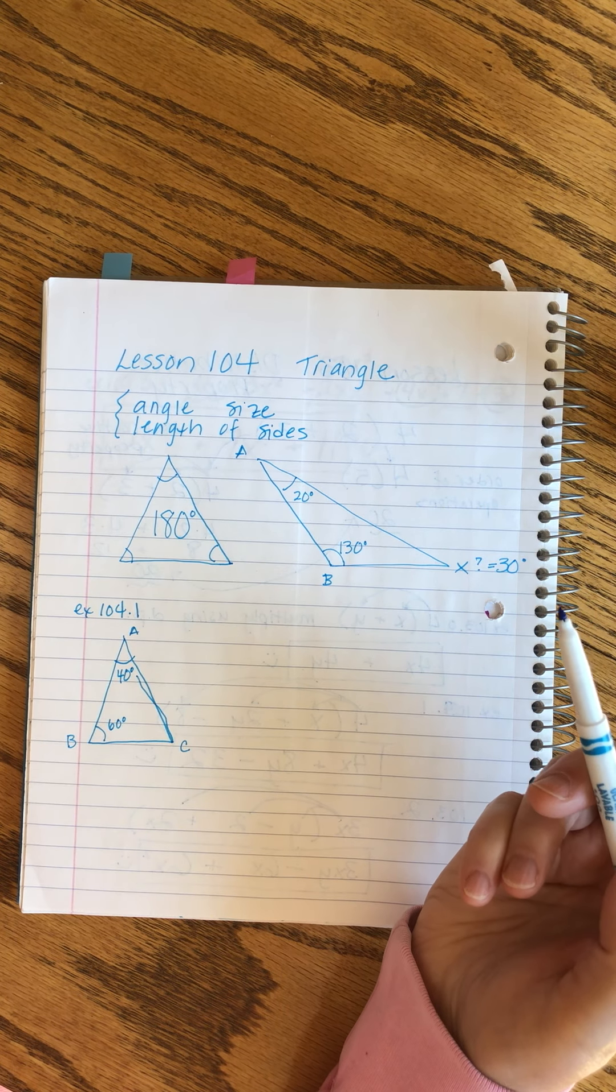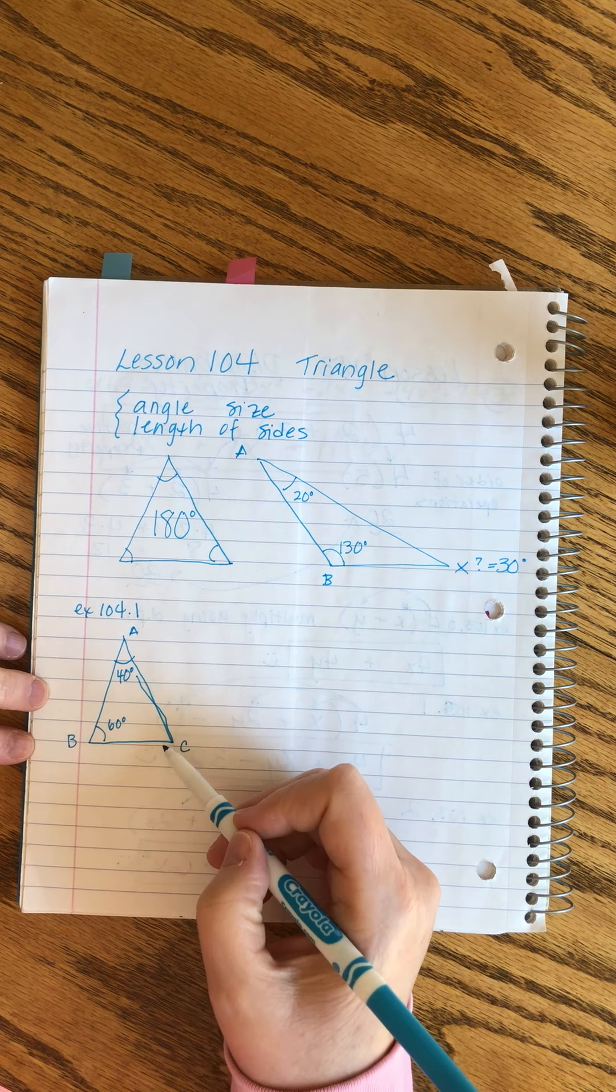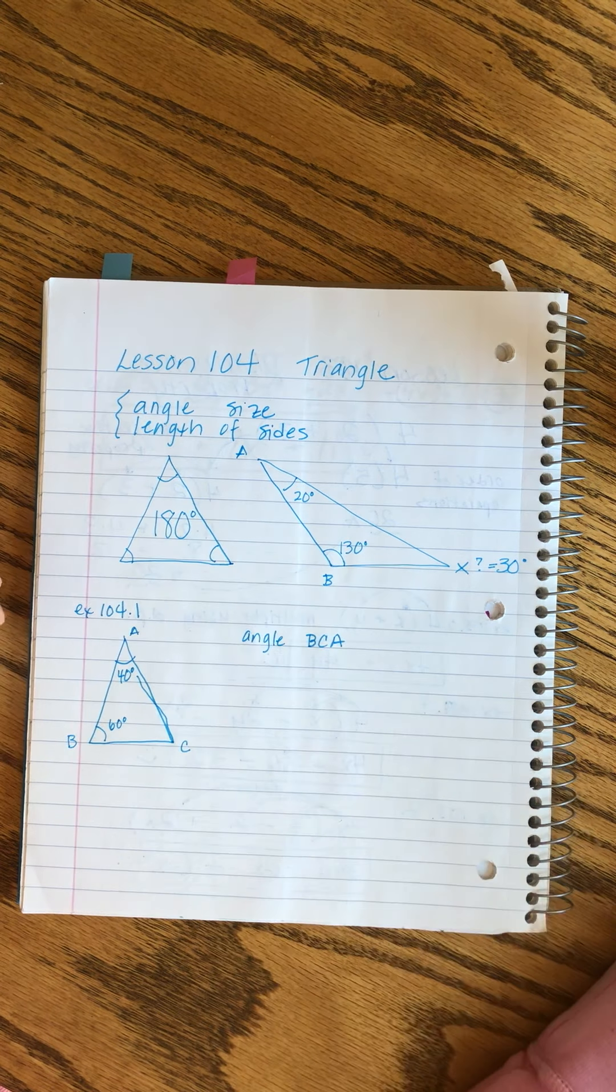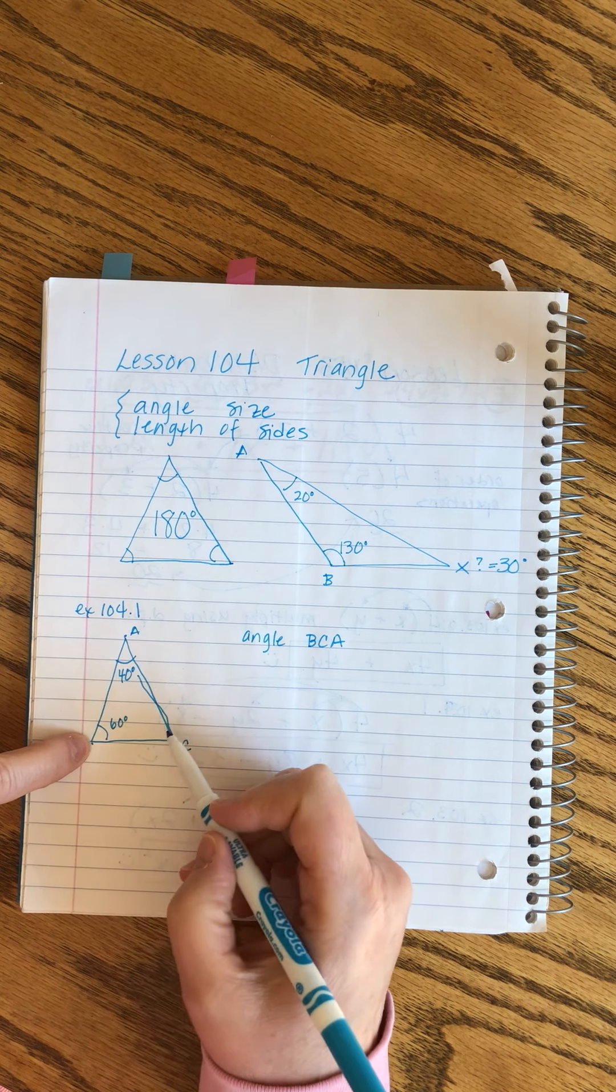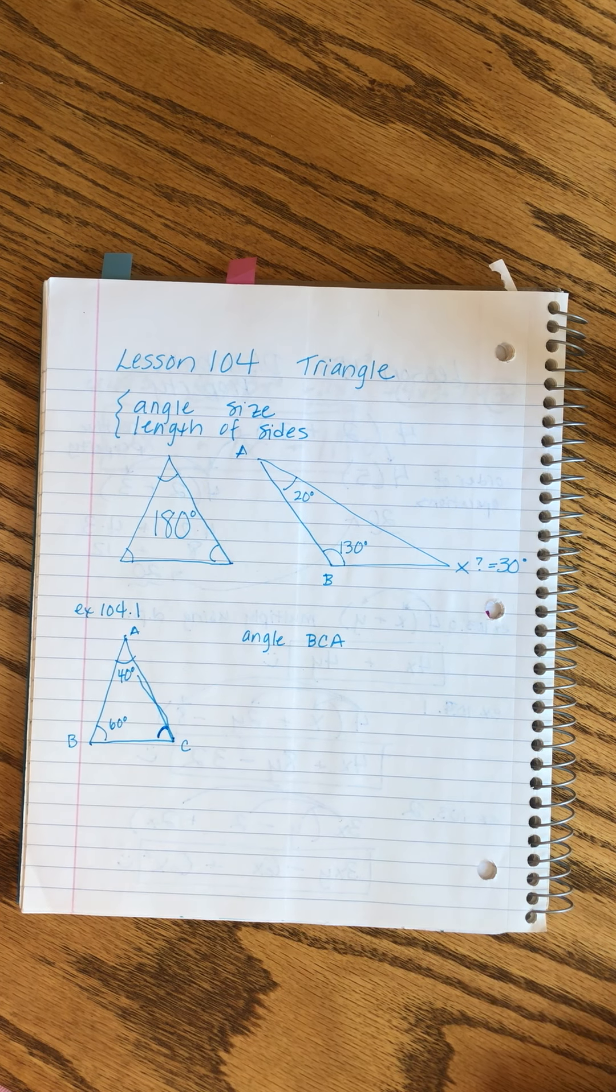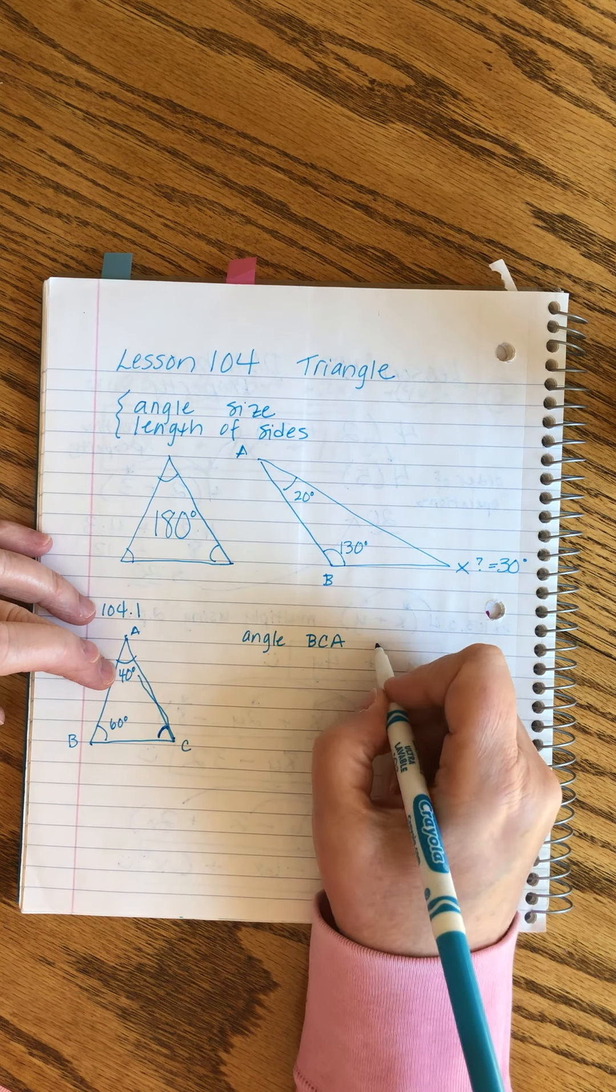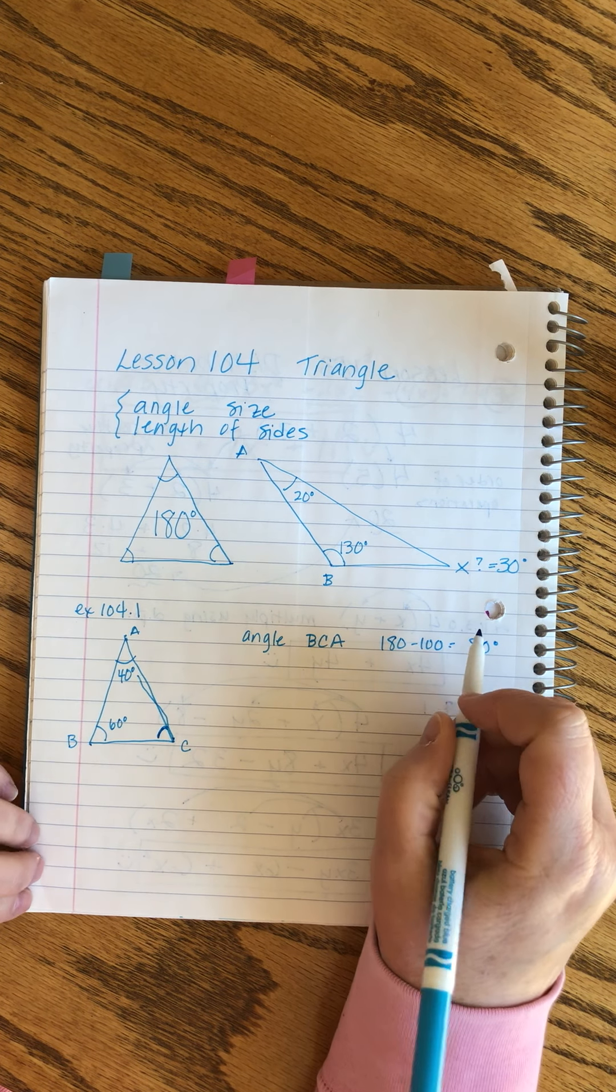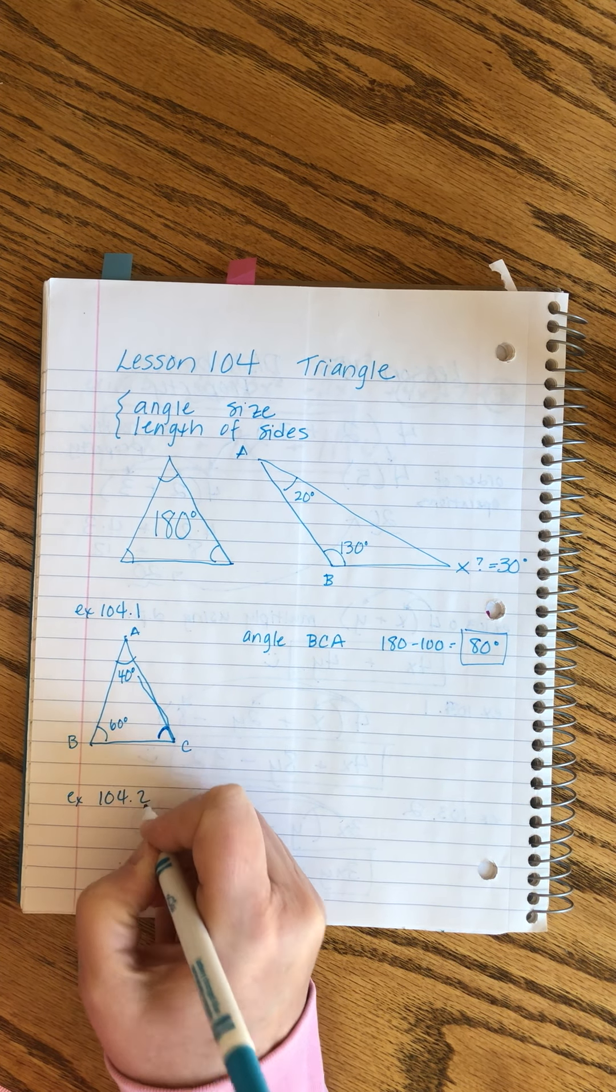Degrees are this weird form of measurement - we're gonna learn more about them as we go. For now just know that there's 180 in a triangle. We're supposed to find the measure of angle BCA. The way we do it is we go to the points in that order: B-C-A. We know they have to add up to 180. These add up to 100, so we just do 180 minus 100 equals 80 degrees.